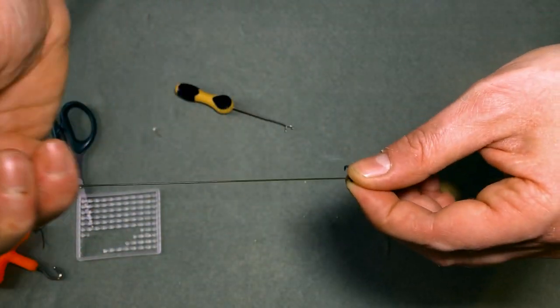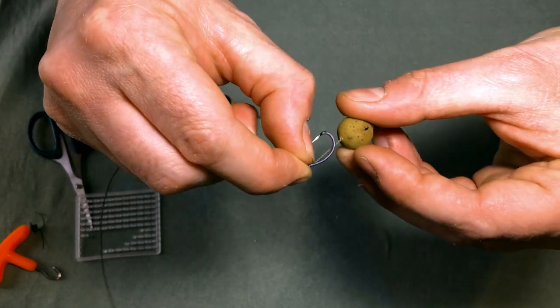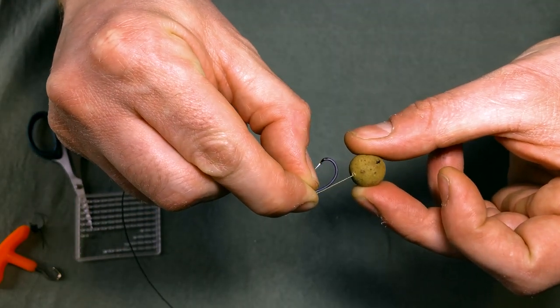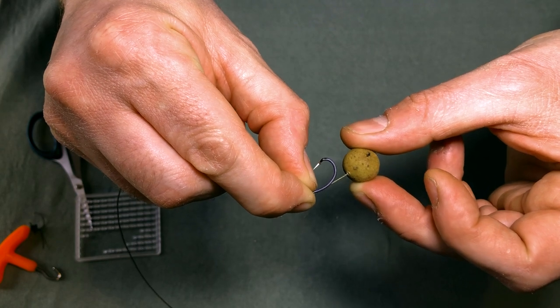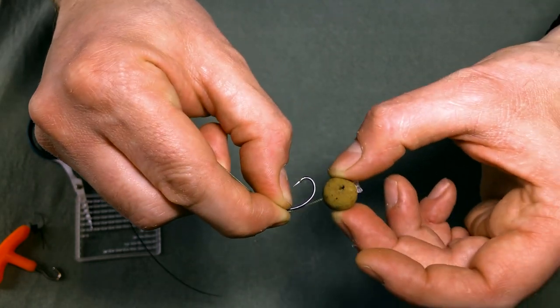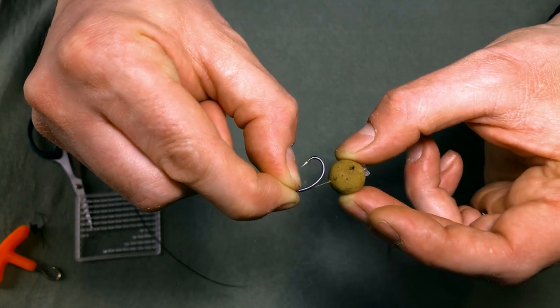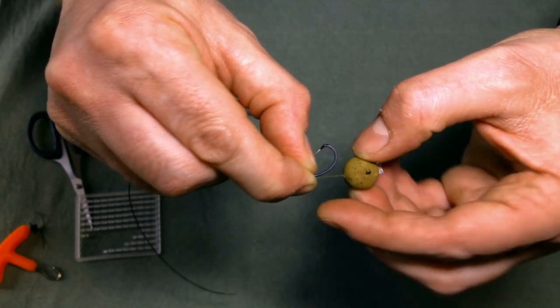And to work out how long hair you need, a good starting point is about 2-3mm from the end of the bend. You can make it longer, you can make it a bit tighter. That's entirely your choice. As I said it's a good starting point about 2-3mm away from the bend of the hook.